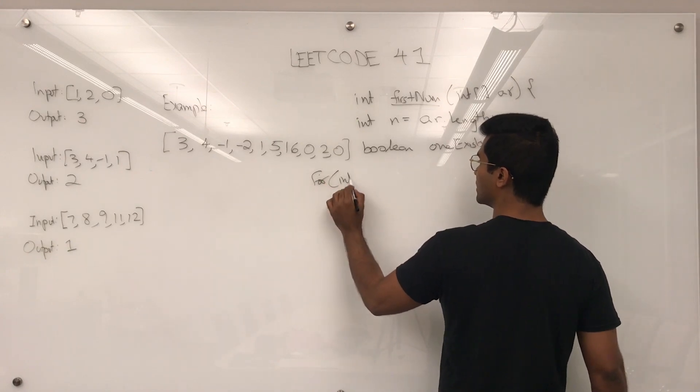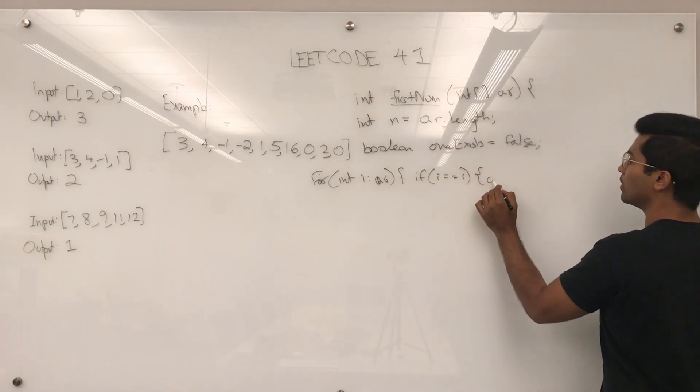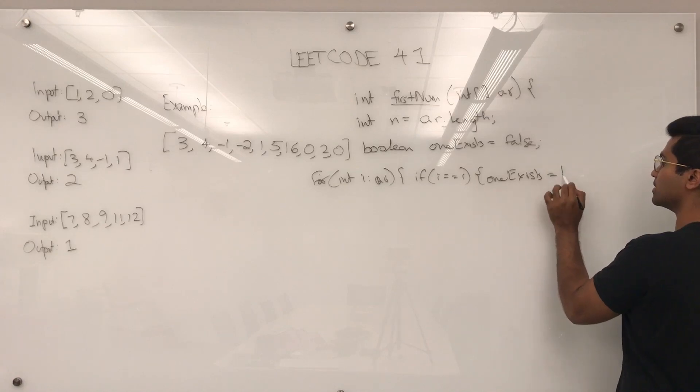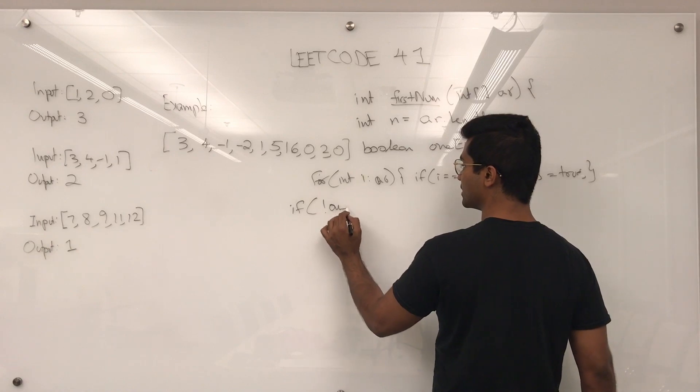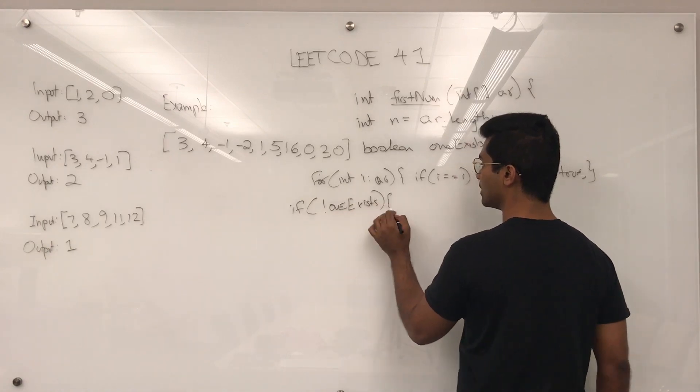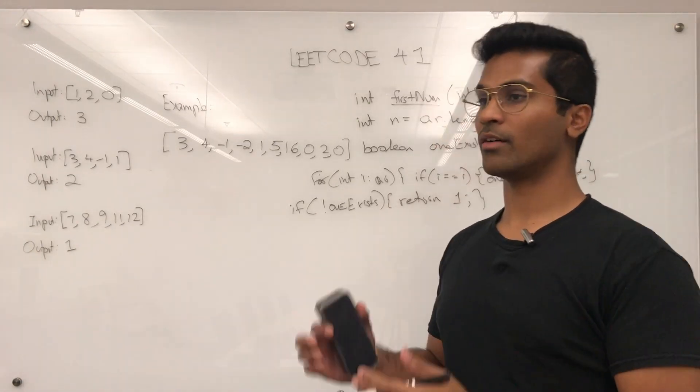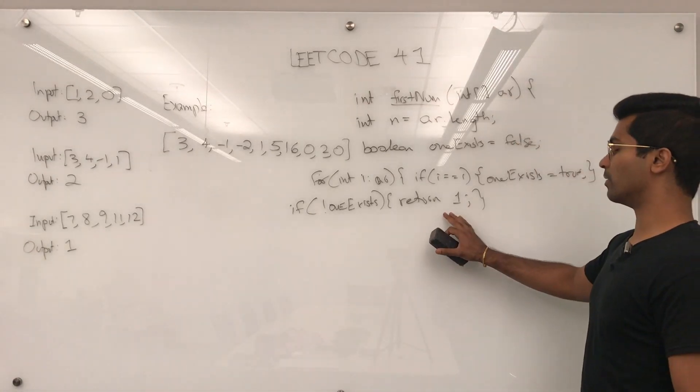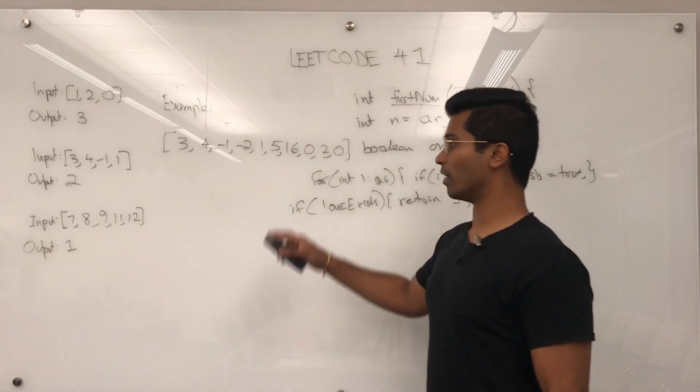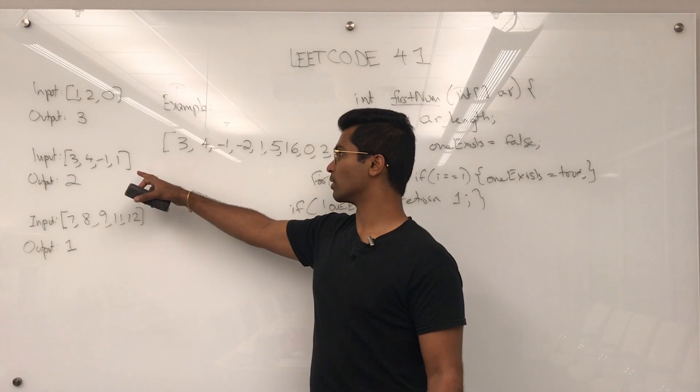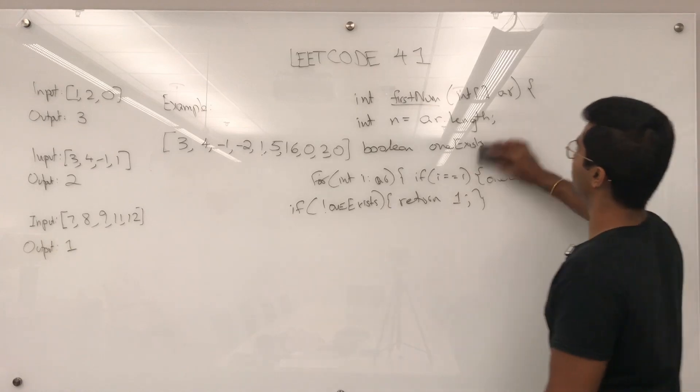Then, for int i through array, if i equals 1, 1 exists is going to be set to true. Now, if 1 doesn't exist, then we return the number 1 because that's going to be the first missing integer from 1 to n. Now, in our case, in this case, 1 exists, so we can't execute this. This one and this one, 1 is there as well. But in this case, 1 is not there, so we have to return 1. Now, let's get into the rest of it.